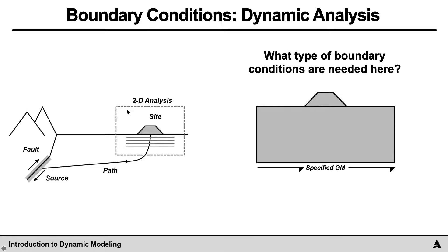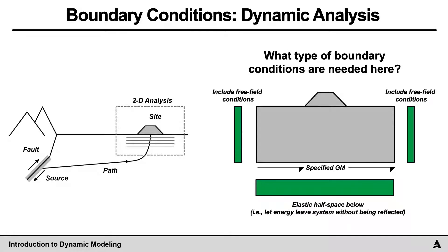But in addition to that, it's important that we also model the elastic half space below, that would be everything below. The objective here is that we want energy to leave the system without being reflected back in. So that's really important. In addition to that, we've cut the vertical sides, and so we've lost the constraints as well as the free field condition which is going to be modeled on both sides as well.